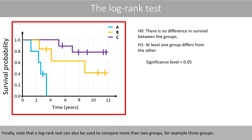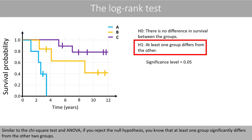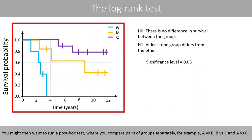Finally, note that a log rank test can also be used to compare more than two groups, for example three groups. Similar to the chi-square test and ANOVA, if you reject the null hypothesis, you know that at least one group significantly differs from the other groups. You might then want to run a post-hoc test, where you compare pairs of groups separately — for example, A versus B, B versus C, and A versus C.